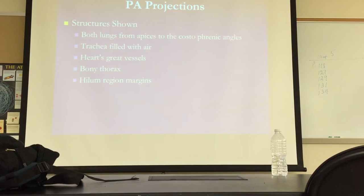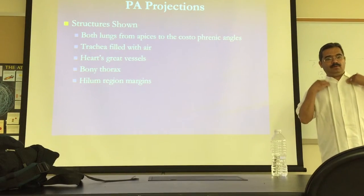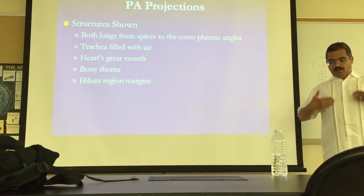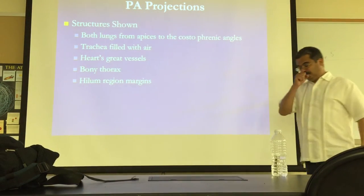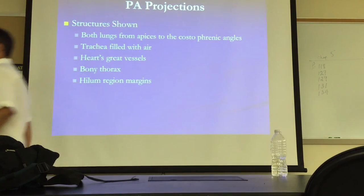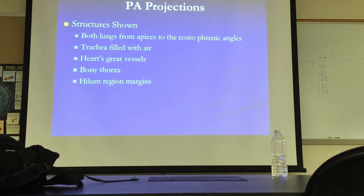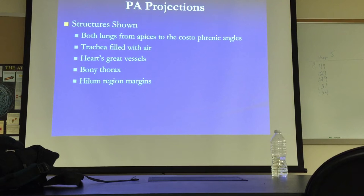You're going to see both lungs, the entire lungs, all the way from the apices at the very top, all the way down to the costophrenic angles. So the apices are here, all the way down to the costophrenic angles.